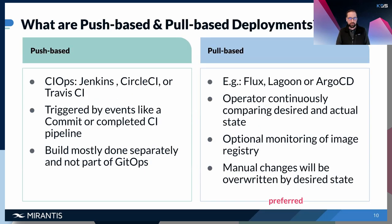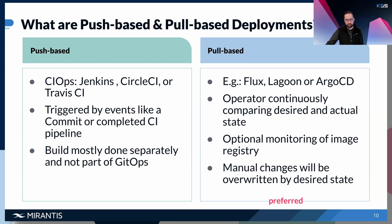Examples of push-based deployment use CI/CD tooling like Jenkins, CircleCI, or Travis CI. It's always triggered by an event such as a commit, a merged feature request, or a completed CI pipeline — for example, you build your image first, and the new image in the registry triggers another pipeline to deploy the changes to your target environment. CI and CD are mostly done separately in this model, and push-based is not always directly part of GitOps.